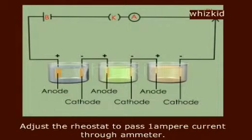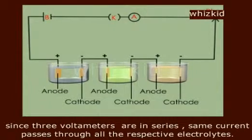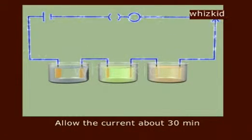Adjust the rheostat to pass one ampere of current through the ammeter. Since three voltameters are in series, the same current passes through all the respective electrolytes. Allow the current for about 30 minutes.